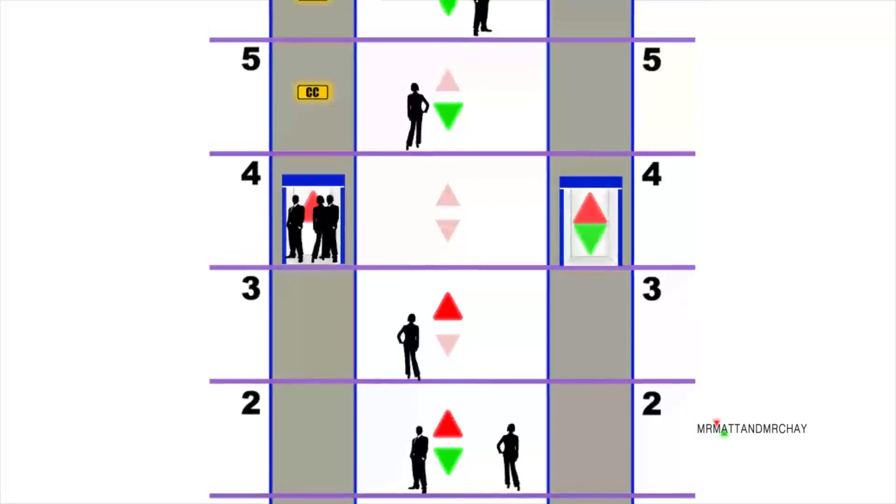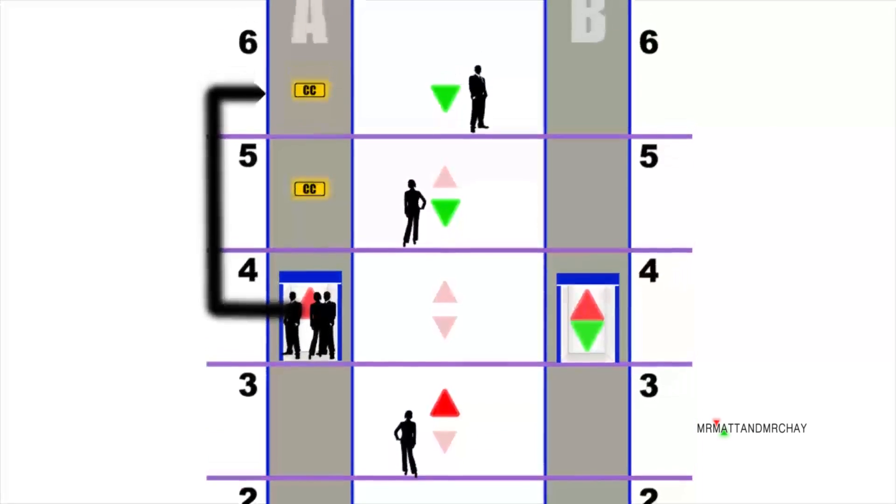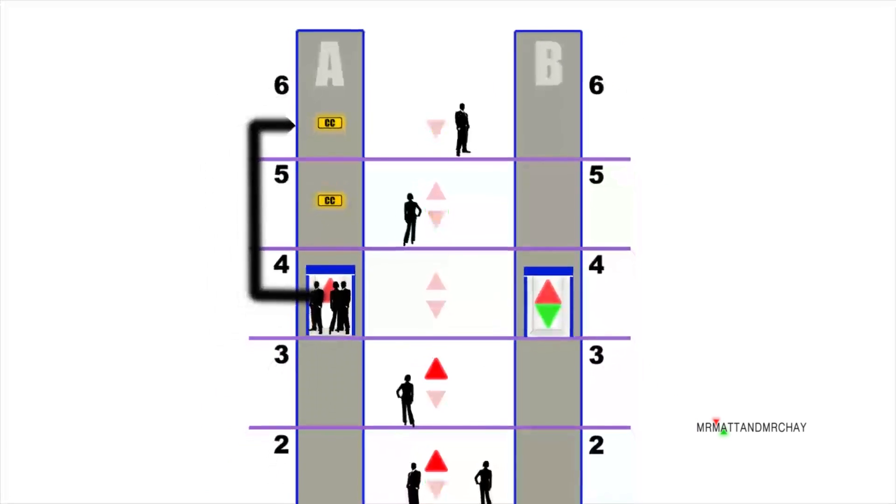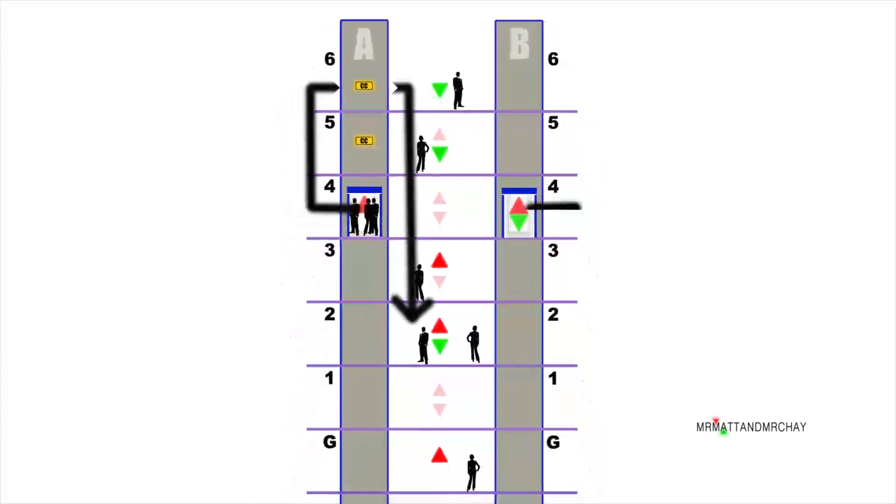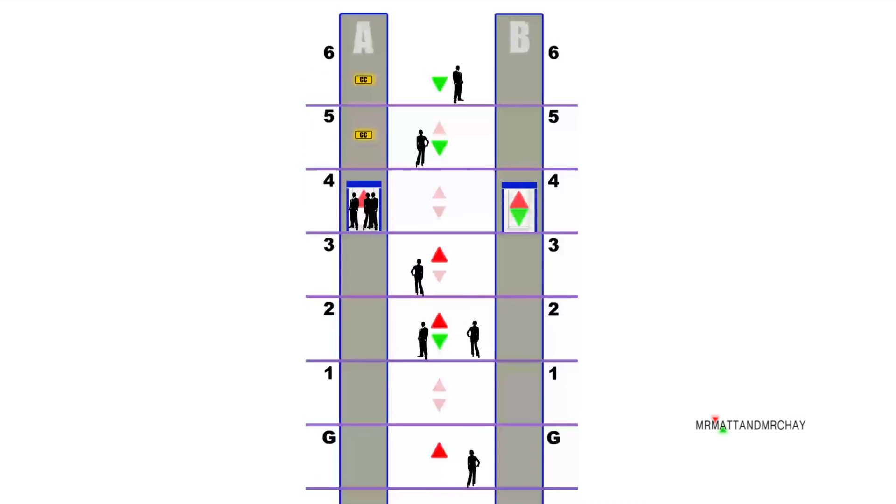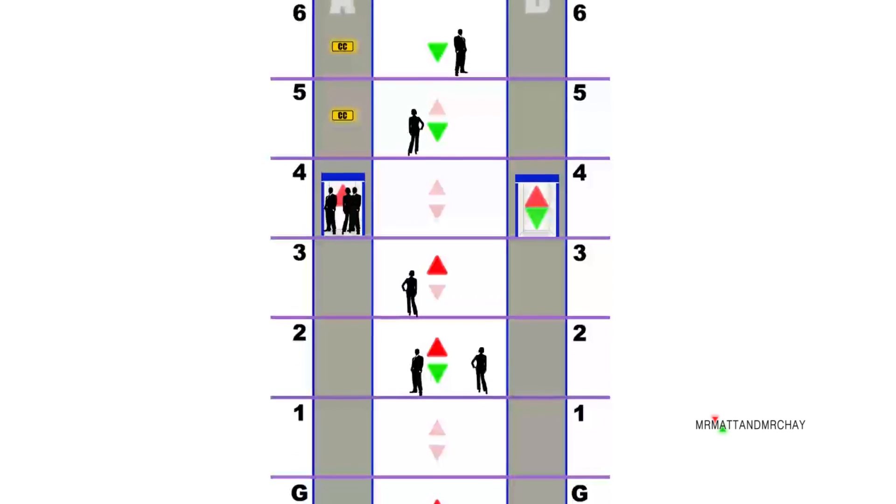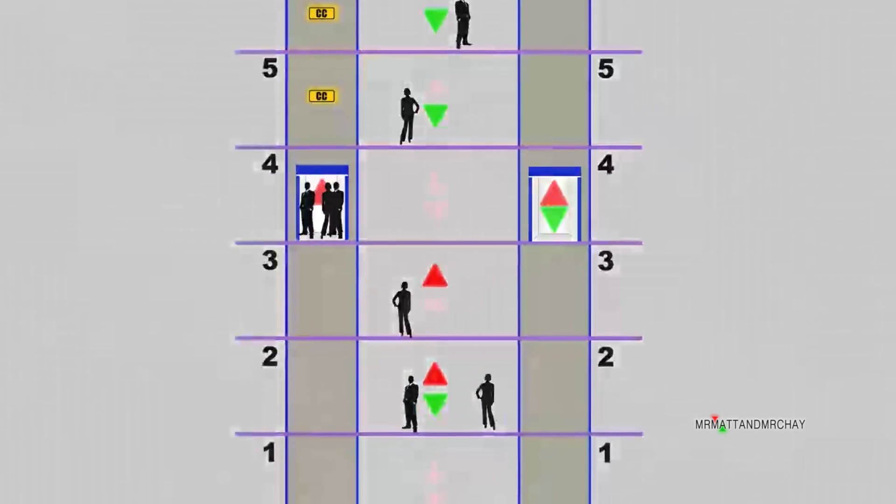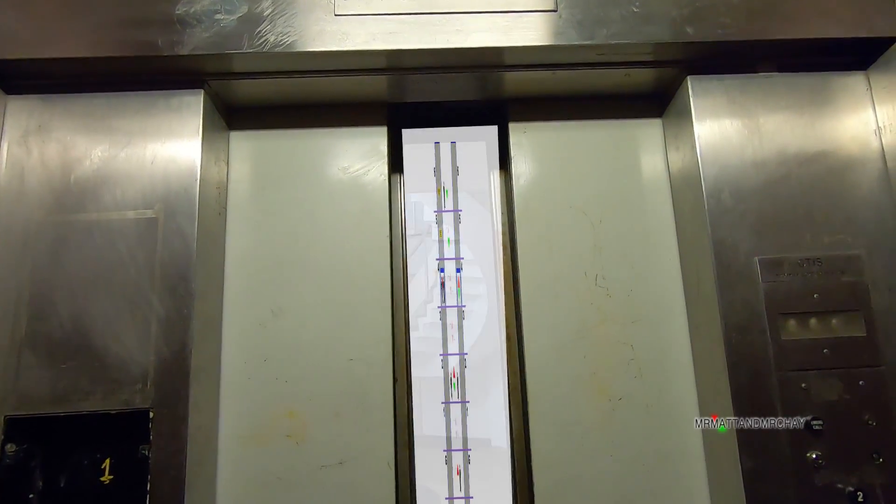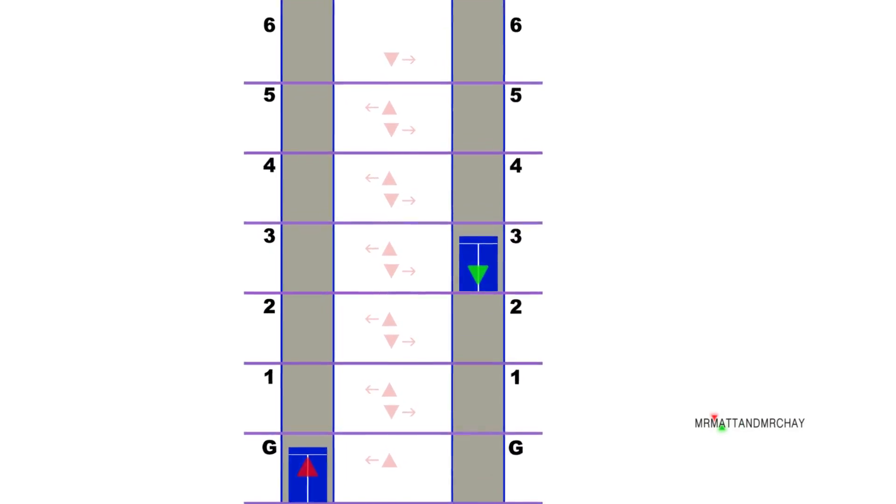It would make logical sense for lift A to continue upwards, stop at five and six for the car calls, and then at the same time collect the down calls. Then lift B could go down to the ground and make a start collecting up calls. This makes perfect sense, but what we're talking about here is the Otis call logic system with relays. If you can hold on to your excitement until after the intro, I'll explain everything.